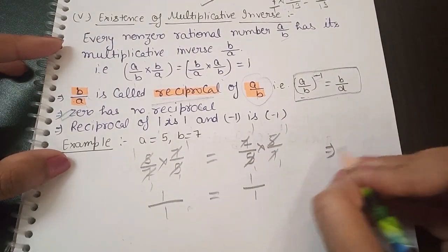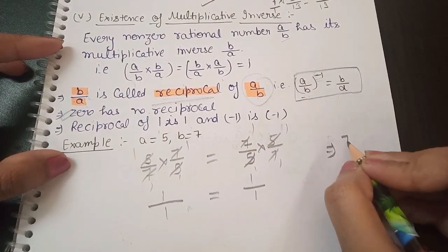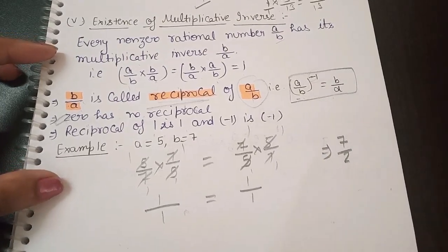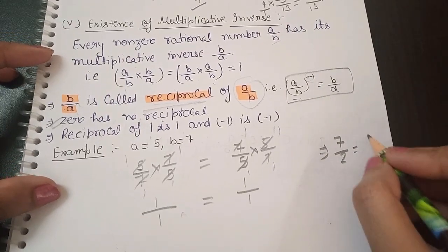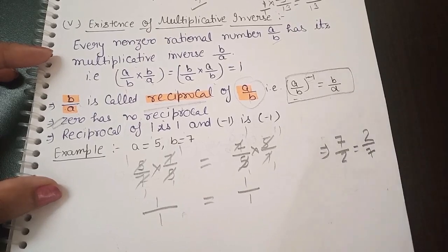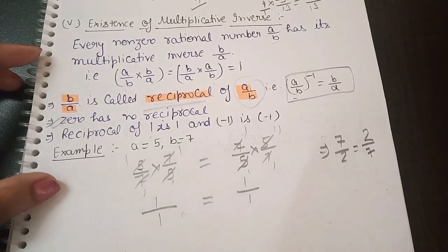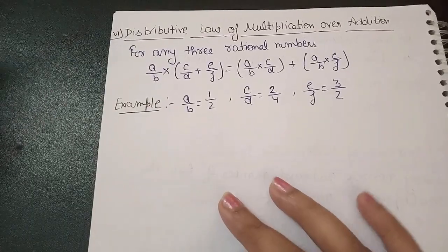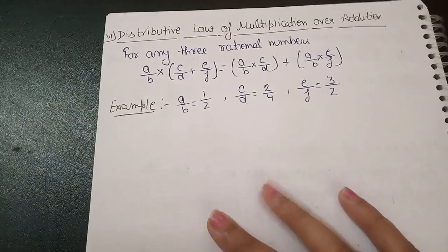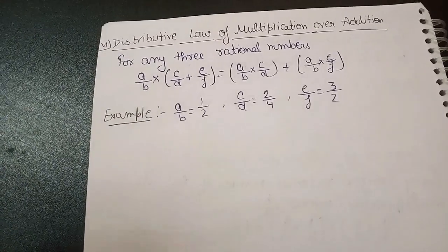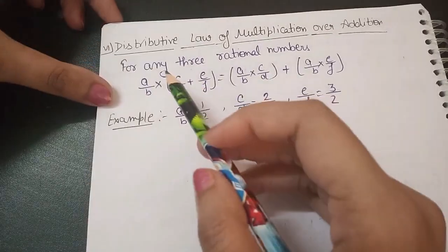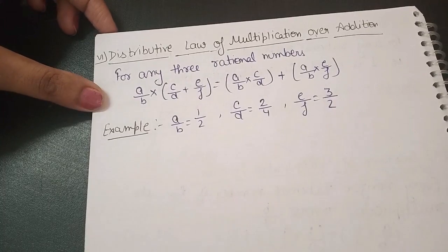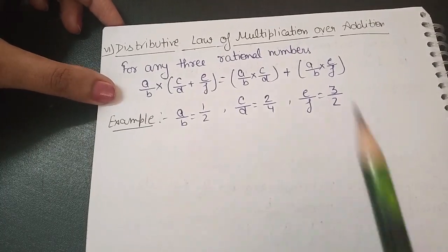For example, the reciprocal of 7/2 is 2/7. Now let's look at the sixth property: the distributive law of multiplication over addition.